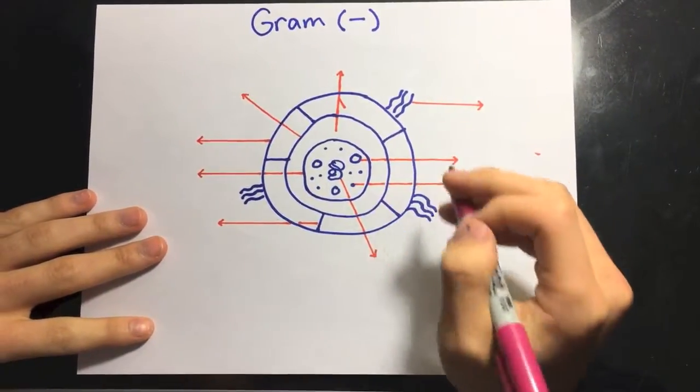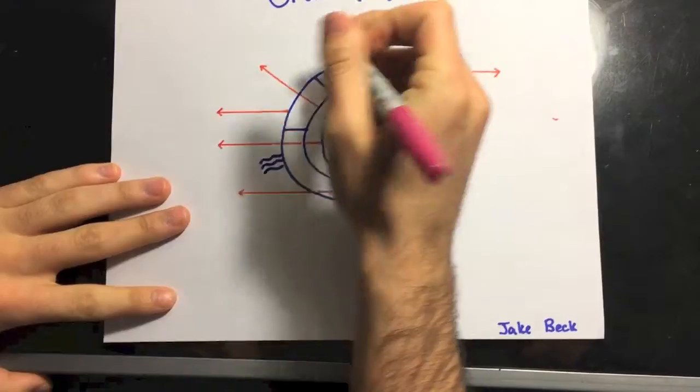So this is the gram-negative cell. Again, I'm going to start out with the plasma membrane.